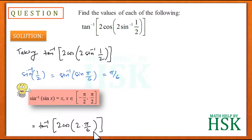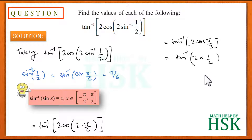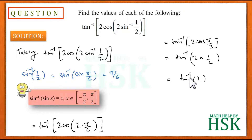Placing π/6 for sin⁻¹(1/2), the factor of 2 simplifies to give π/3. So we obtain tan⁻¹(2cos(π/3)). Since cos(π/3) = 1/2, this becomes tan⁻¹(2 × 1/2), which simplifies to tan⁻¹(1).